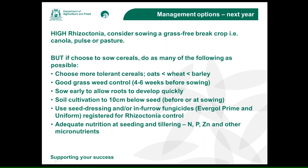When deciding what to put in and you know you've got Rhizoctonia, if you're going to go with cereals, go with oats — they are least susceptible. Then wheat, and barley is actually the most susceptible. So try and avoid barley if you can if you've got a Rhizoctonia paddock.